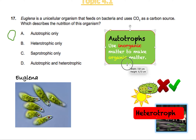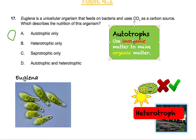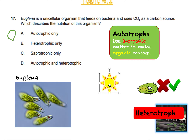In the formal definition, an autotroph uses inorganic matter to make organic matter. Inorganic matter is basically non-living — think sunlight, water, carbon dioxide. So plants use inorganic matter like sunlight and CO2 to make organic matter, which is themselves. They use sunlight through photosynthesis to build themselves, because anything living is organic. That's what an autotroph is.